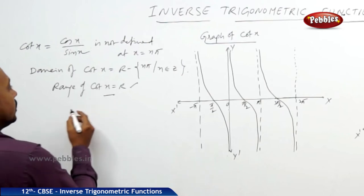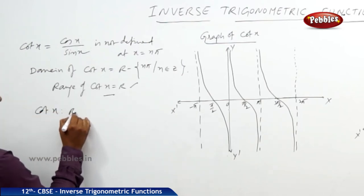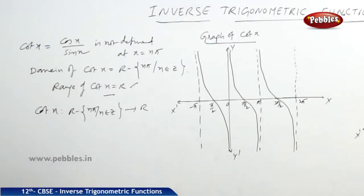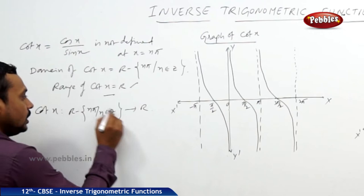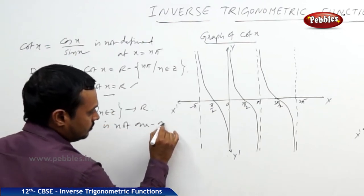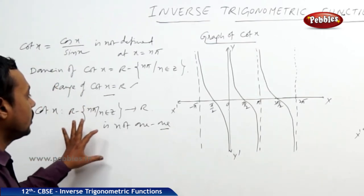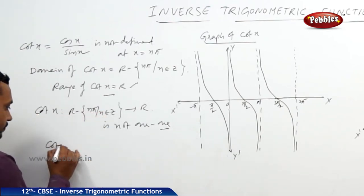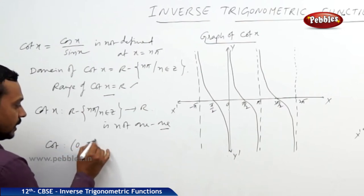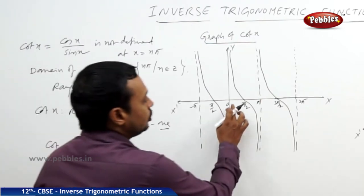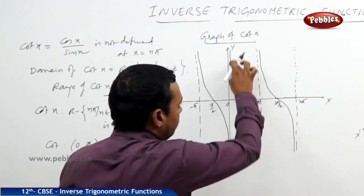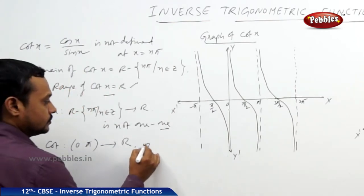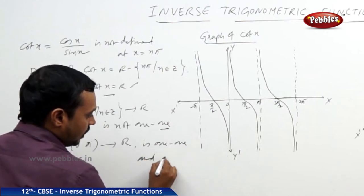Since cot x has the domain R minus {n pi, where n belongs to Z} to R, it is a function defined on this domain. But it is not a one-to-one function. In fact, the function is defined but it is not one-to-one on this full domain. However, when the interval is restricted to (0, pi), cot x is completely decreasing, so it is both one-to-one as well as onto.